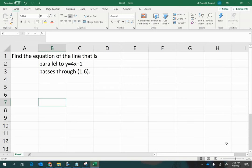Find the equation of the line that is parallel to y equals 4x plus 1 and passes through the point 1, 6.